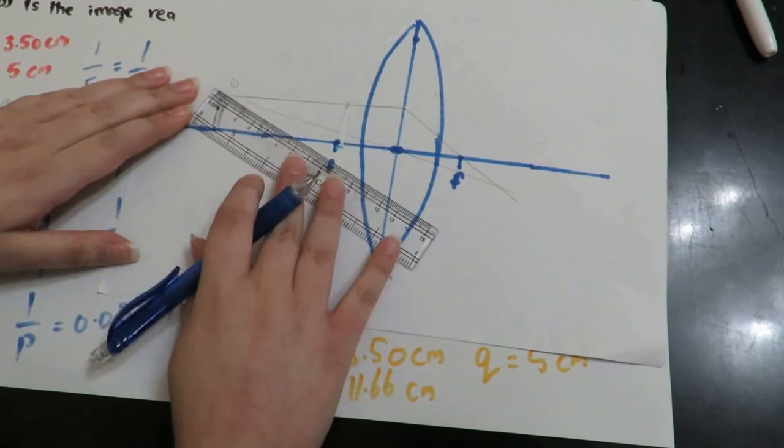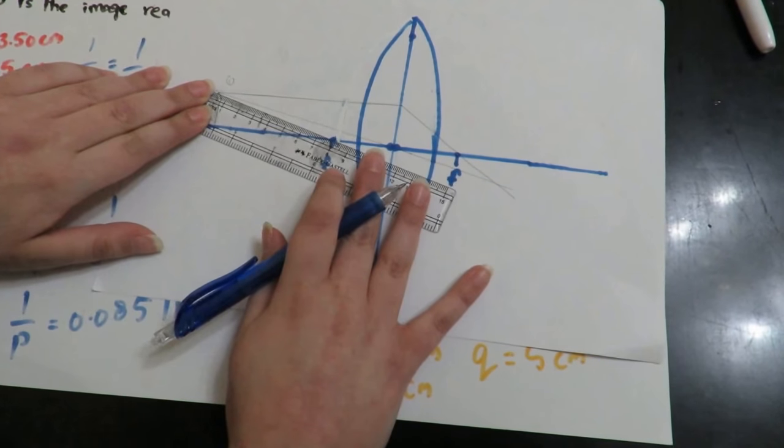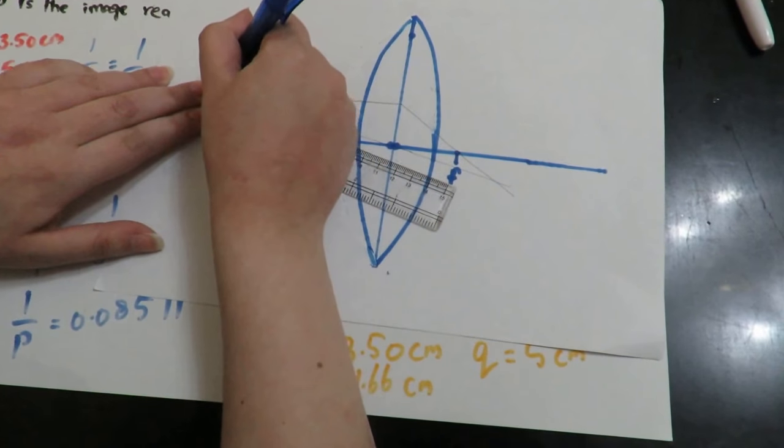And the last one is the focal ray because it passes through the first focal point.